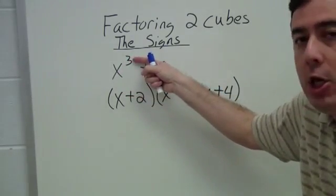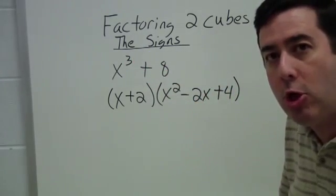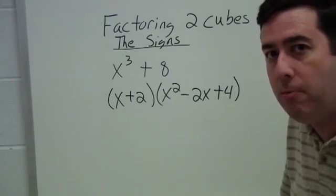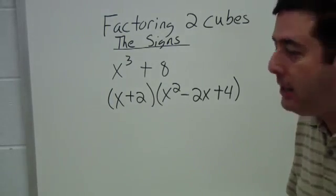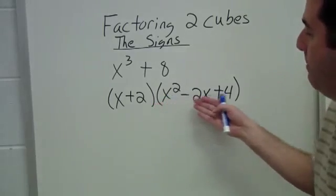X is obviously being cubed. And here the 8, that's the same as 2 cubed. 2 times 2 times 2 makes 8. The way that this one factors is a binomial times a trinomial.